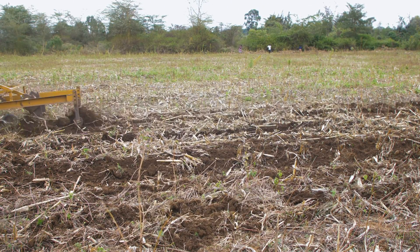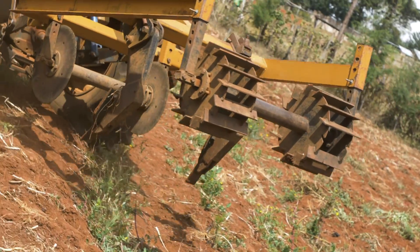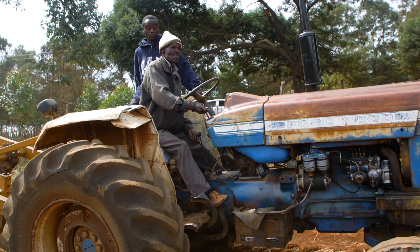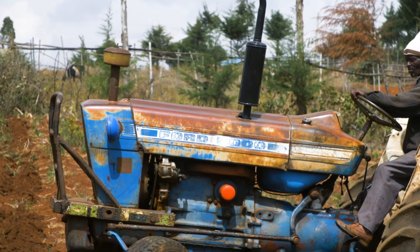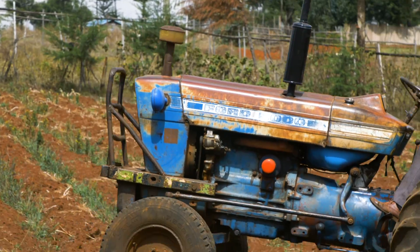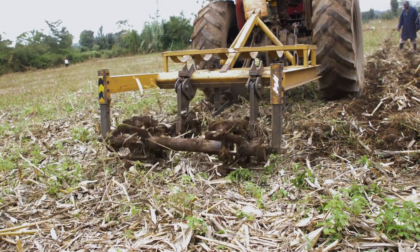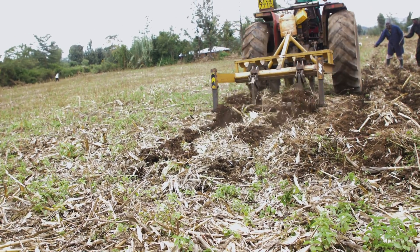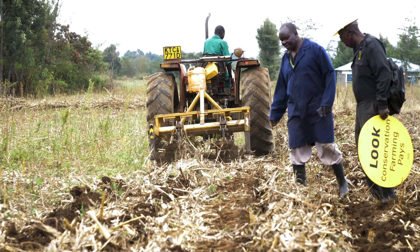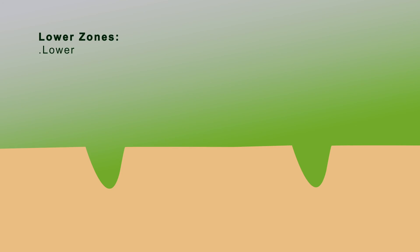Before you start ripping your land, make sure the reaper is level to the ground and adjusted correctly by the help of the top link and arms. Ensure the spacing between the tines is set at the required row width for maize, which is 75 cm or 90 cm, depending on the agroecological zones. For the lower zones, for example, lower eastern, western and Nyanza, 90 cm spacing is recommended.